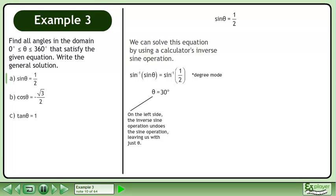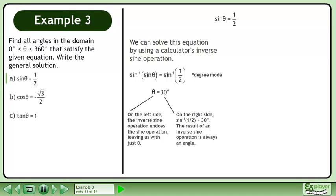On the left side, the inverse sine operation undoes the sine operation, leaving us with just θ. On the right side, the inverse sine of 1 over 2 equals 30 degrees. The result of an inverse sine operation is always an angle.